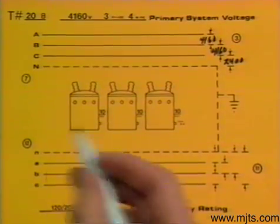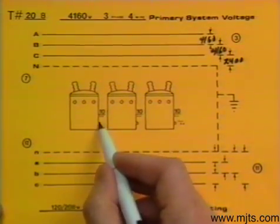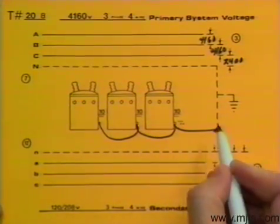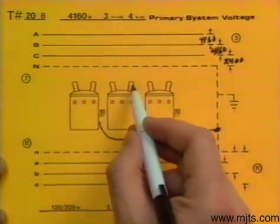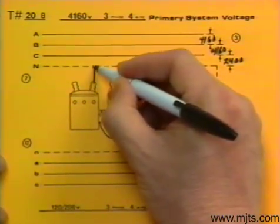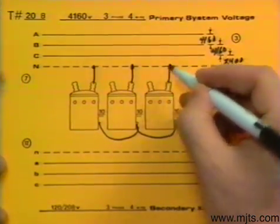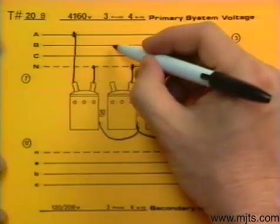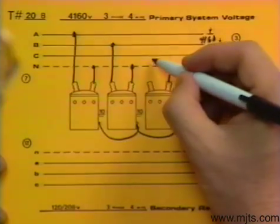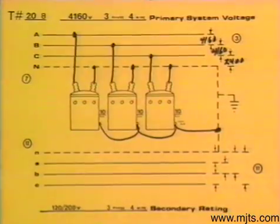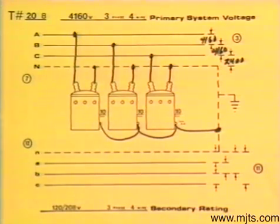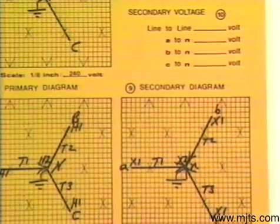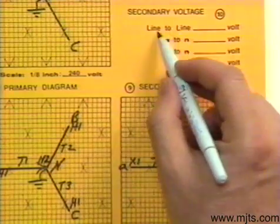We now go back to step seven and make our high-side connection. First, ground out the tubs and make sure protective grounds are on there. All H2 terminals are grounded. Transformer 1 H1 goes to A, transformer 2 goes to B, and transformer 3 H1 goes to C. That completes our high-side connection. We then take step ten and indicate voltages available line to line.